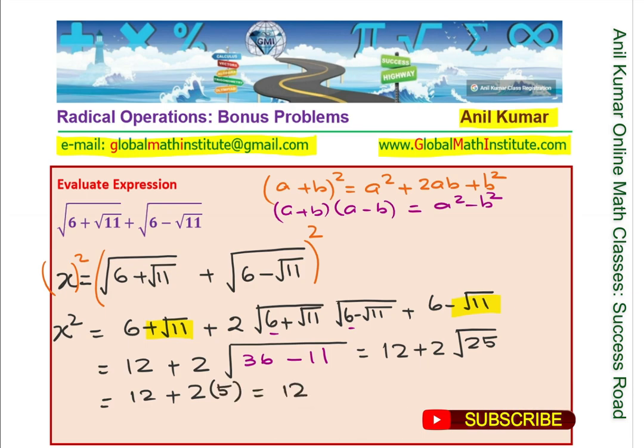So we get 12 plus 2 times 5, which gives us 12 plus 10, or 22 as our answer. That is how you evaluate this particular expression. I hope it really helps — feel free to write your comment, share your views, and if you like, subscribe to my videos. Thanks for your time and all the best.